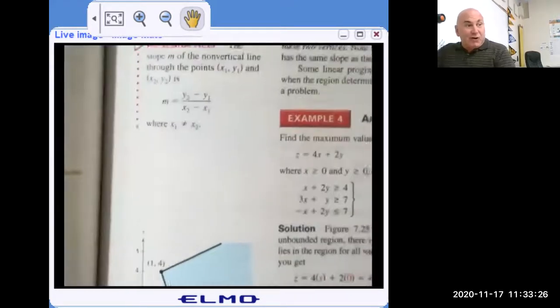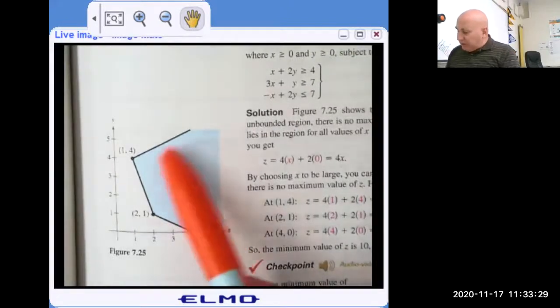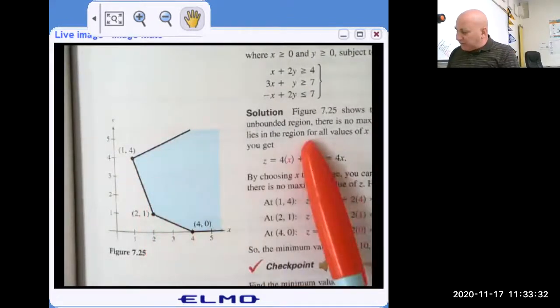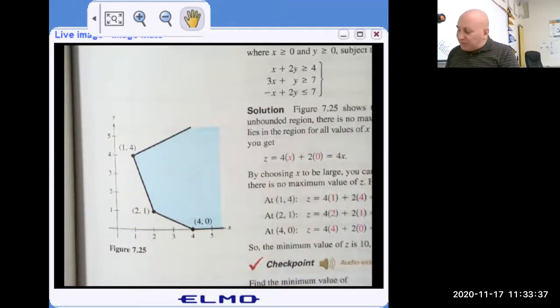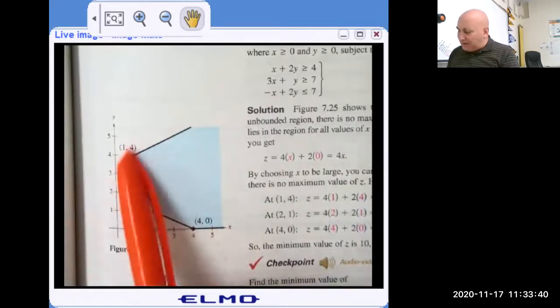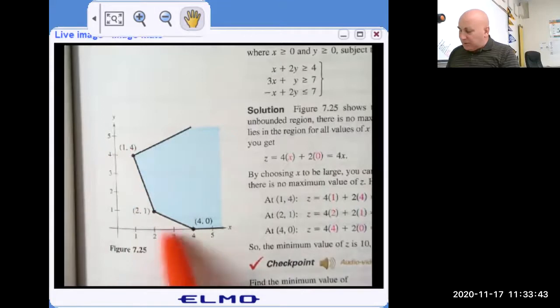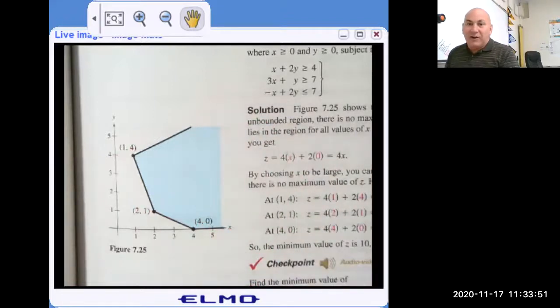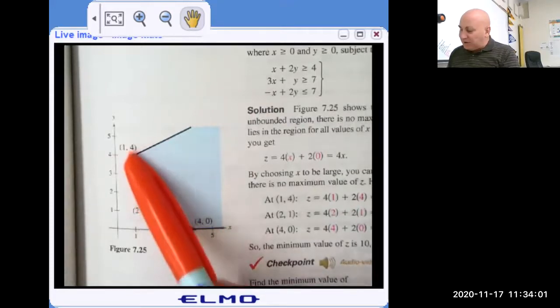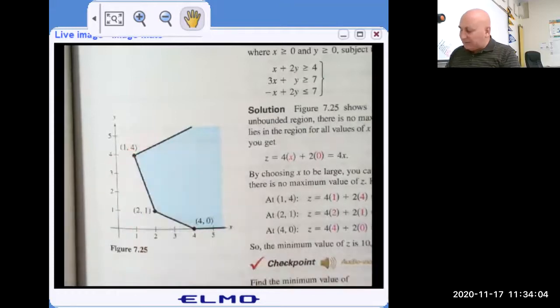Sometimes we have what's called an unbounded region. The limits are like this, but it goes on forever. So depending on the objective function, you could either get a maximum or a minimum at these points, but probably not both. It might be, if it goes on forever out here, X goes to infinity, Y goes to infinity. If your objective is like F of X, Y is equal to X plus Y. Well, obviously that's going to be a maximum of infinity. So all you're going to get is a minimum over here at one of these points.